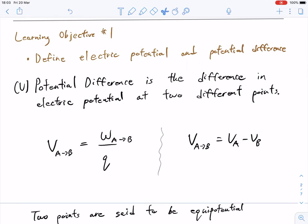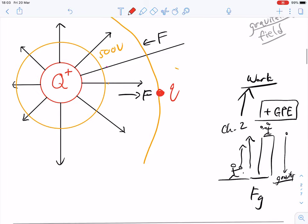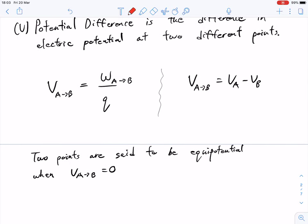Learning objective number two is the potential difference. Remember, just in the back of your mind, this is the electric potential difference. So really, it's the same idea. It's just saying, hey, between two different points, what is the difference of that?